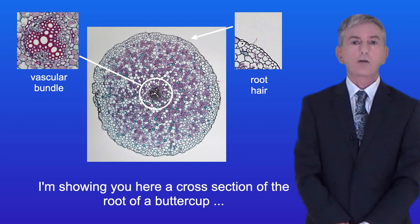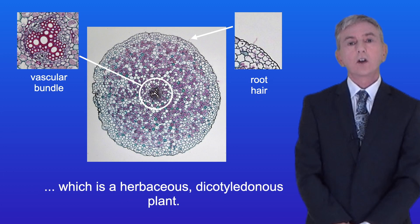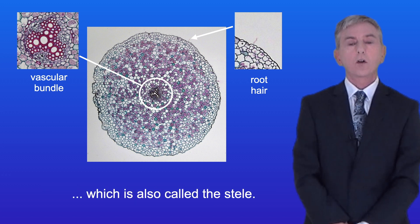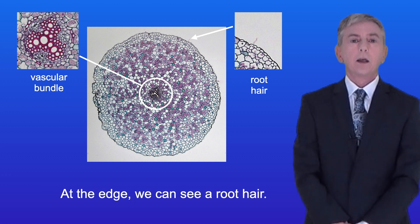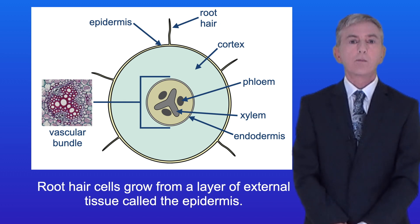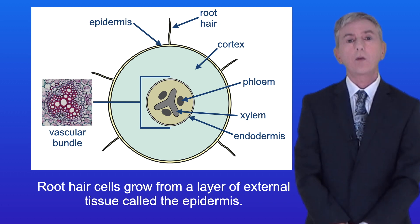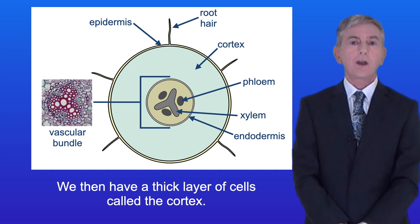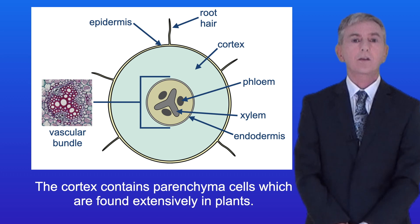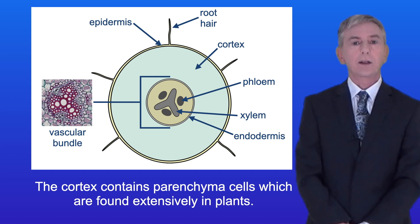Here is a cross section of the root of a buttercup, which is a herbaceous dicotyledonous plant. In the centre of the root we can see the vascular bundle, also called the stele, and at the edge we can see a root hair. In this simplified diagram of the root cross section, root hair cells grow from a layer of external tissue called the epidermis. We then have a thick layer of cells called the cortex, which contains parenchyma cells found extensively in plants.